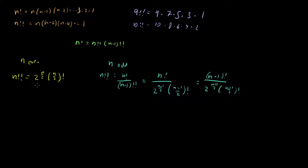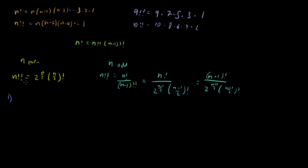I've stated that this is true, but I haven't actually shown it. So I want to prove that the even formula is true using induction. For induction, we start with the base case. The base case is n equals 2, since we're doing the even case. We get 2 double factorial, which equals 2, and 2 to the 2 over 2 times 2 over 2 factorial, which is 2 to the 1 times 1 factorial, which also equals 2. So our base case checks out.